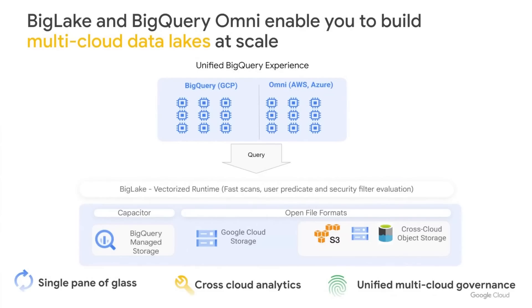We launched BigLake general availability earlier this year. BigLake provides a standardized layer across different storage formats, including BigQuery managed tables, blob stores, and open file formats. Omni provides the compute engine with which you're able to access and query data in your AWS or Azure environments seamlessly using the BigQuery UI. Omni and BigLake together provide several key benefits: first, a single pane of glass to query your multi-cloud data lakes; second, cross-cloud analytics by combining data across platforms; third, unified governance and secure management of your data, wherever it may be.